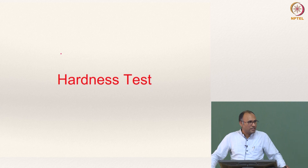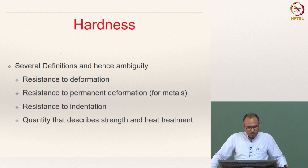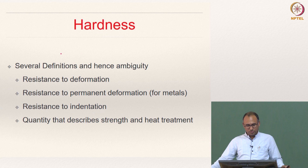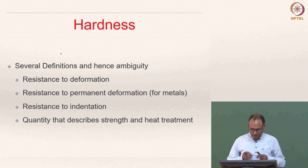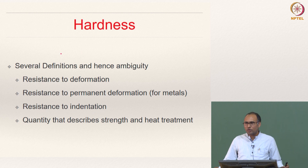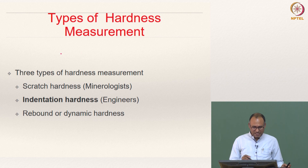So the next property is hardness and how do we go about measuring hardness. There are several definitions available in the literature for hardness, and hence it is quite ambiguous. People define hardness as resistance to deformation. Some define it as resistance to permanent deformation for metals, some as resistance to indentation, and somebody says hardness is a quantity that describes strength and heat treatment. Which one to follow? Because there is a lot of ambiguity, in this class we will try to stick to one definition more suitable for mechanical engineers — indentation hardness.